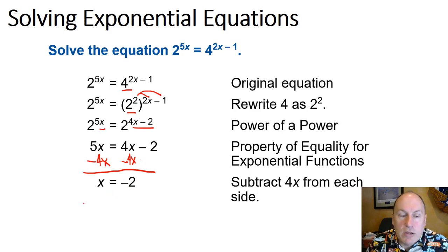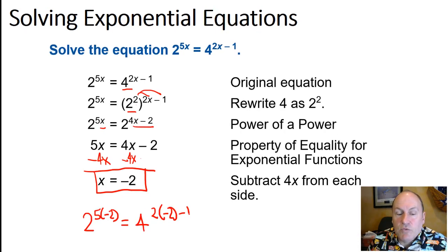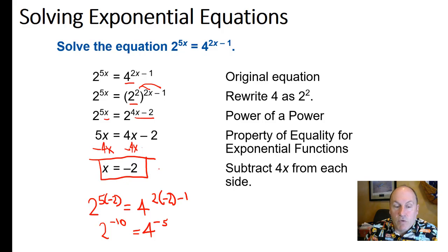Check your work: x equals negative 2, so 2 to the 5 times negative 2 should equal 4 to the 2 times negative 2 minus 1. That means 2 to the negative 10 does indeed equal 4 to the negative 5 power, and therefore the answer checks out.